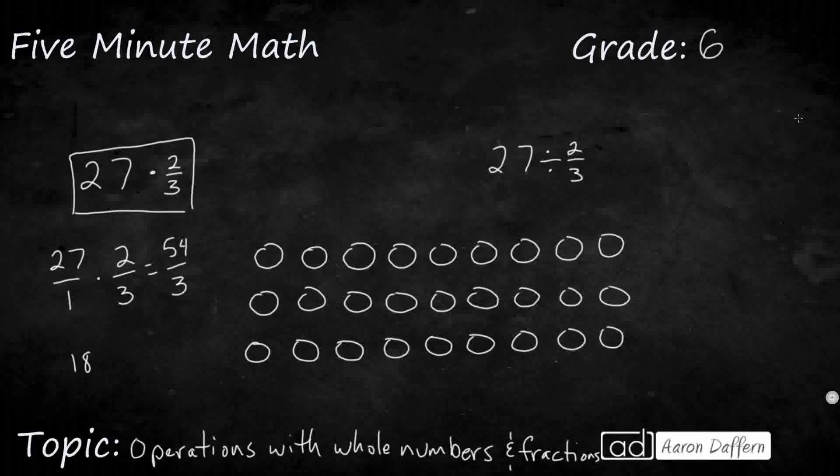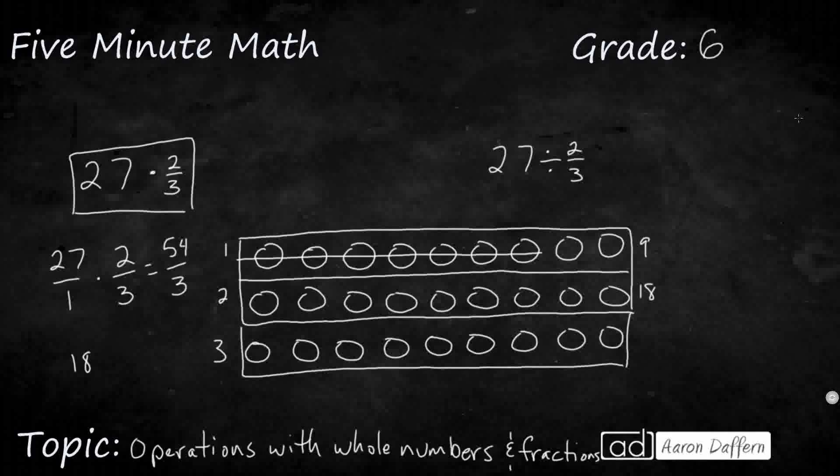So that makes sense. If you think about these as three big rows, one big row, two big rows, three big rows, I just took two out of the three big rows. Here's my two-thirds. If you want to split it up like this, and I'm just going to take this row right here. So I've got nine in this row, and I've got nine in this row, that makes a total of eighteen. So I'll just draw some lines through right here, that is my eighteen.